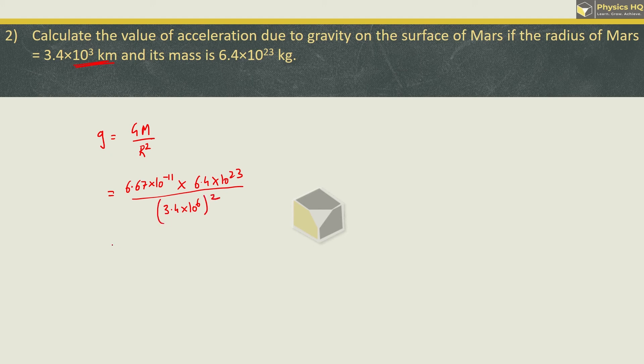We need to square it, so this will be 6.67 × 6.4 divided by 3.4², multiplied by 10⁻¹¹⁺²³⁻¹². When you solve this part using logarithms, you will get g value as 3.693 meters per second squared.